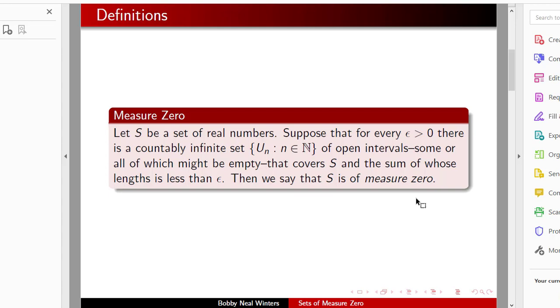Suppose that s is a set of real numbers and suppose that for every epsilon greater than zero, there is a countably infinite set u sub n, such that n is an element of the natural numbers, of open intervals, some or all of which might be empty, that covers s and the sum of whose lengths is less than epsilon. Then we say that s is of measure zero.